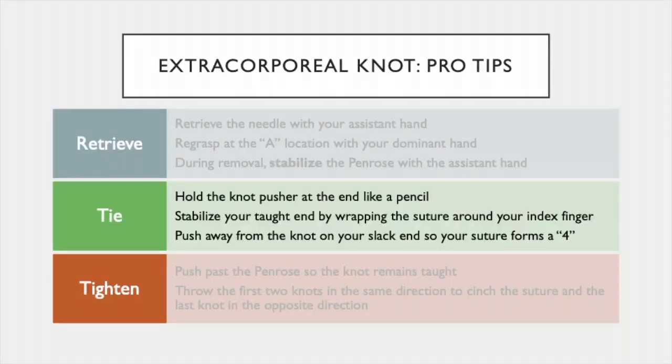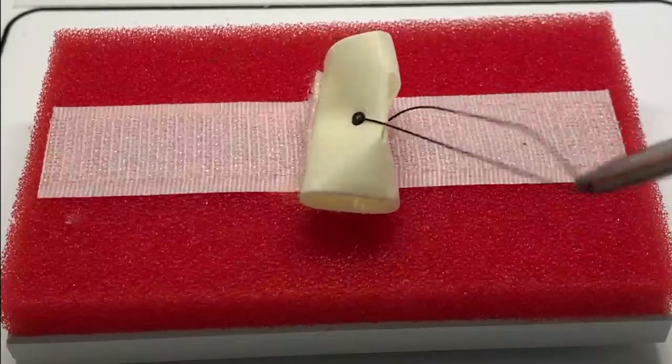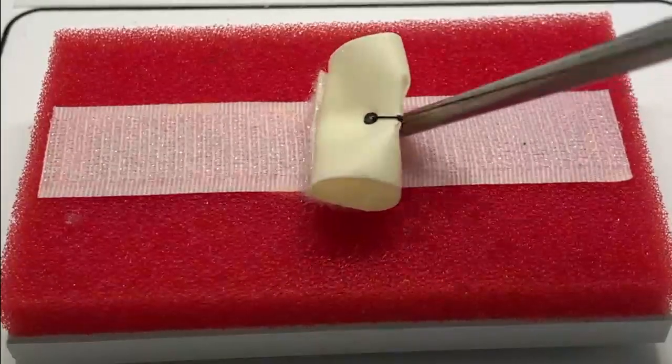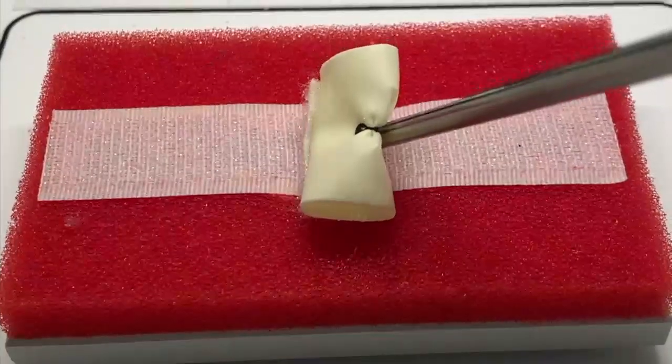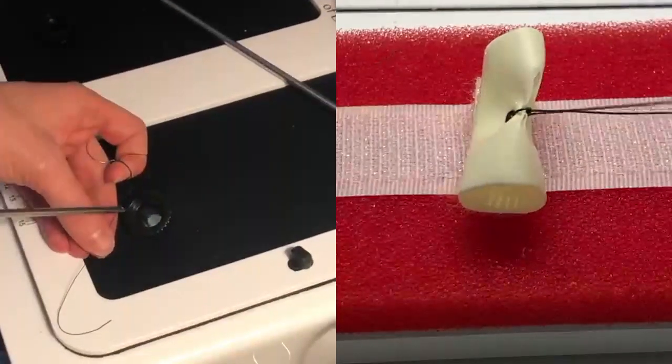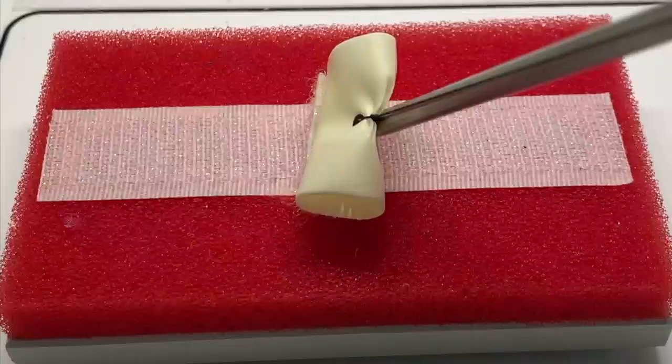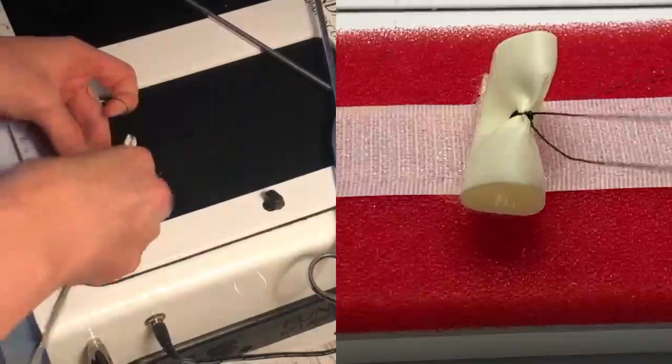The final tips are for intracorporeal knot tying. When throwing a knot, push away from the knot so the suture forms a 4 as seen here. This allows you to push past the drain to cinch the knot. The first two throws are in the same direction. Wrap the taut end around your index finger to ensure tension. Push away from the knot, holding the knot pusher at the end like a pencil, and push the knot past the drain as before.